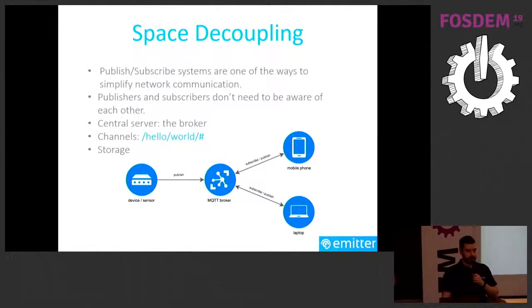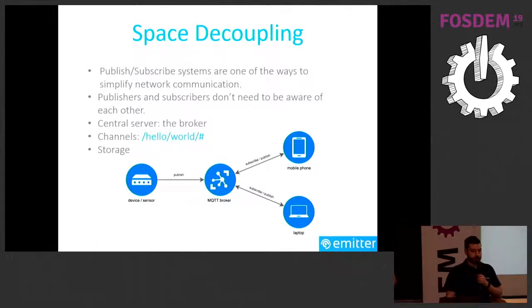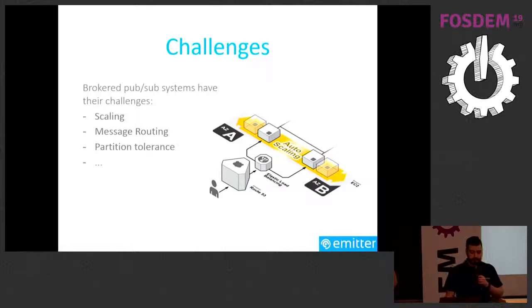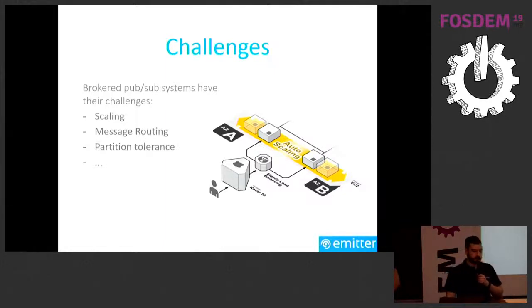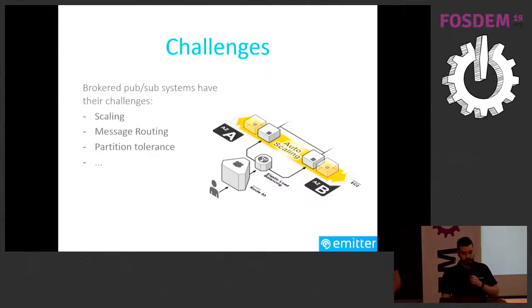That's a nicer solution, but still not perfect. What happens if you have a very successful application with millions of messages exchanged every second? One server may not be enough — you need a cluster of brokers. With several servers you need message routing to ensure delivery, fault tolerance if one or more servers break down, and the ability to scale up and down efficiently without wasting resources.